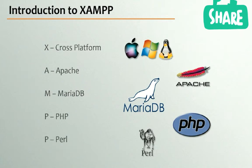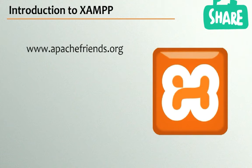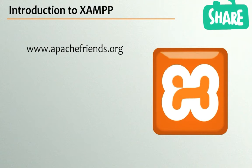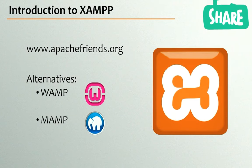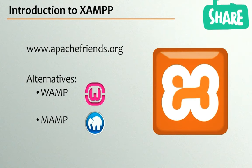The second P stands for Perl, another back-end programming language, though we won't be focusing on Perl in this course. To get XAMPP set up, go to apachefriends.org to download the XAMPP installer for your operating system. Note that XAMPP now supports PHP 7, but we're sticking to PHP 5 for now. Alternatively, if you already have WAMP (Windows), MAMP (Mac OS X), or LAMP (Linux) installed, those are fine — but I'll be using XAMPP for this course.